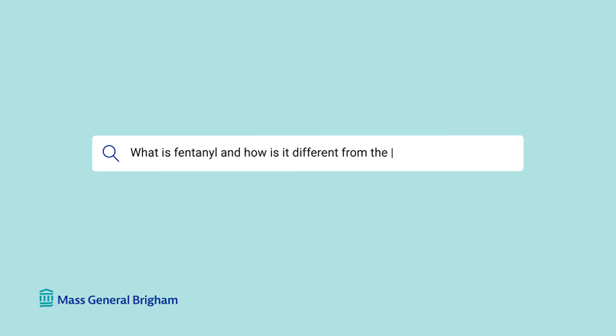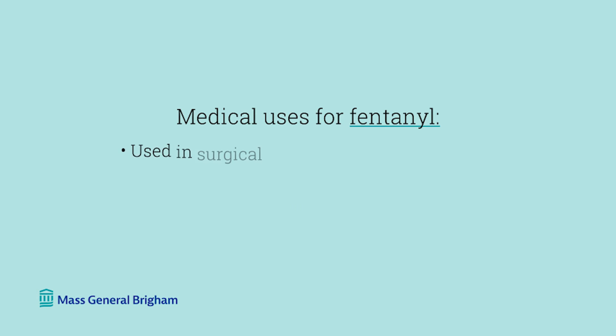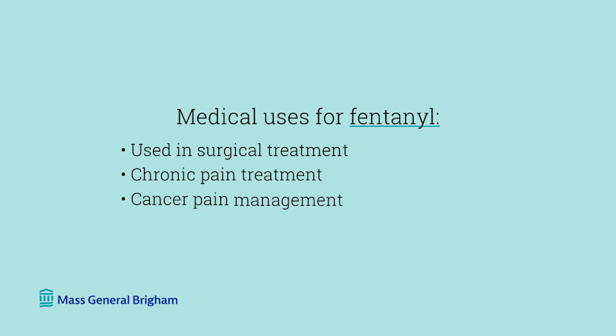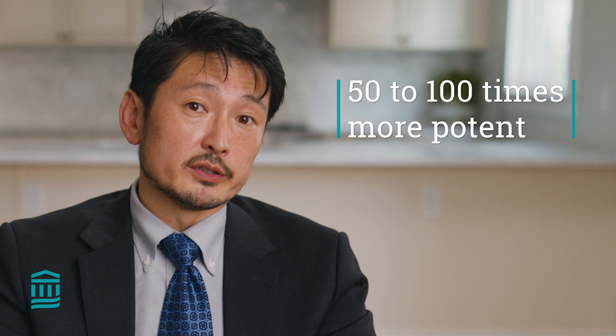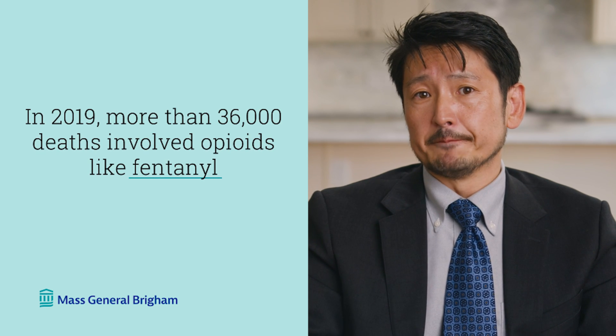So what is fentanyl and how is it different from the other opioids? Fentanyl is a chemical used in medicine for surgical treatment and also for chronic pain treatment, especially when it comes to severe pain like cancer. Fentanyl that you see on the illicit market today is completely produced in the laboratory — it is not diverted pharmaceutical fentanyl. We believe it's about 50 to 100 times more potent than heroin, and that's why it's had a devastating consequence on the opioid crisis today.